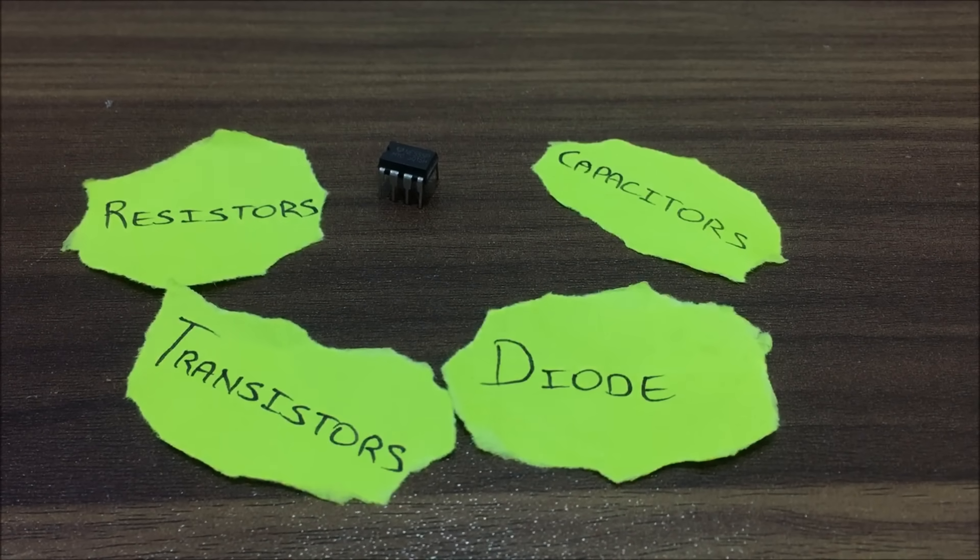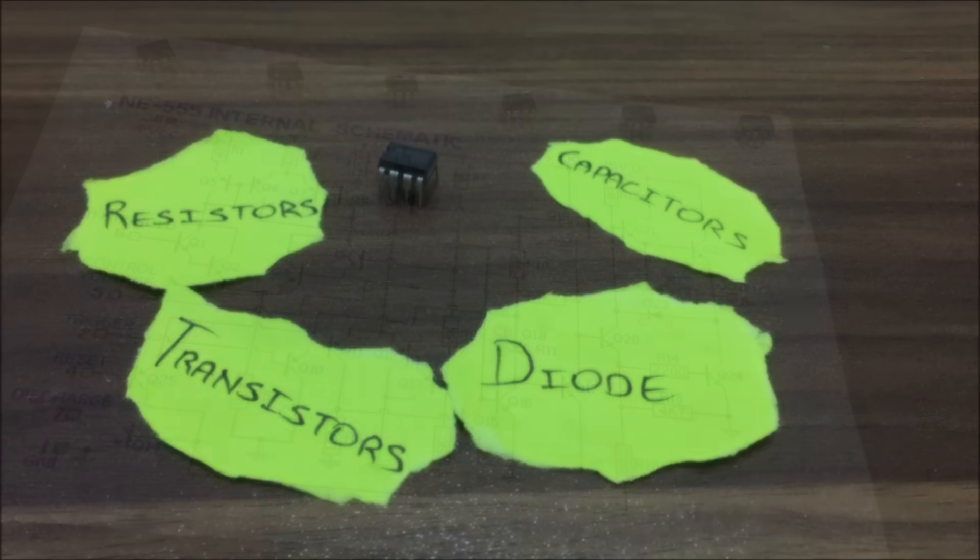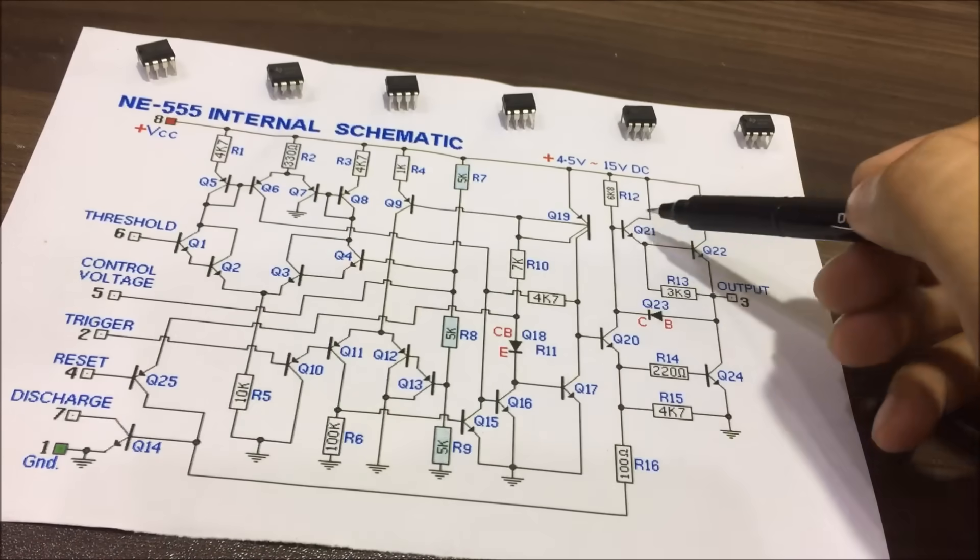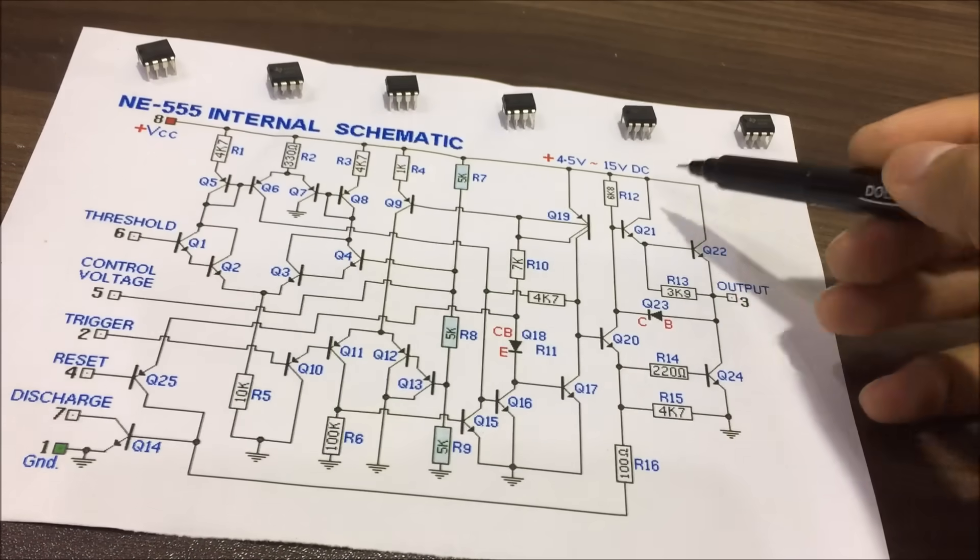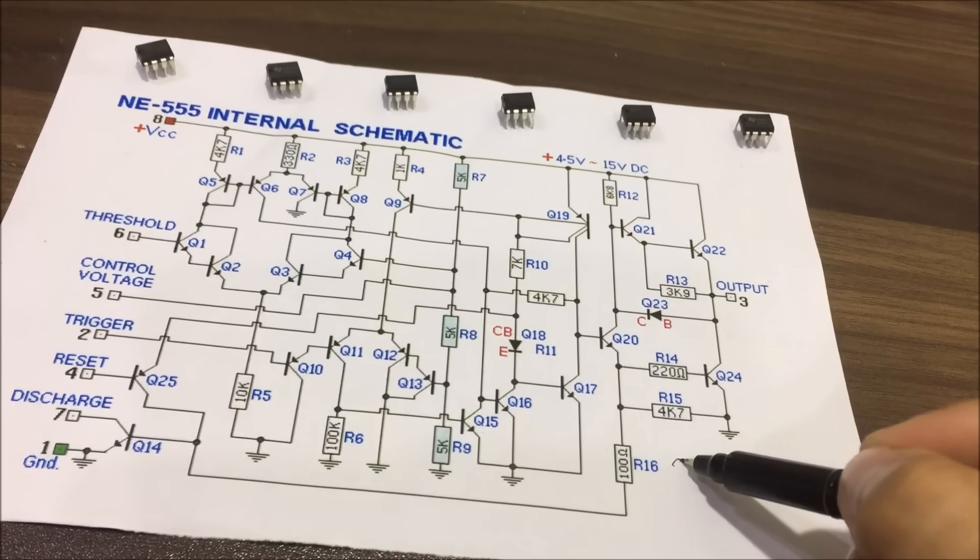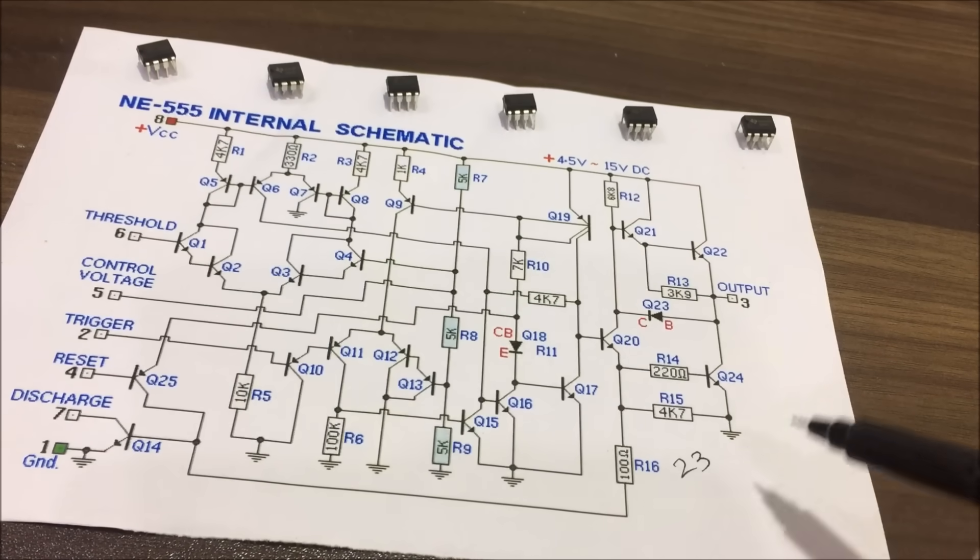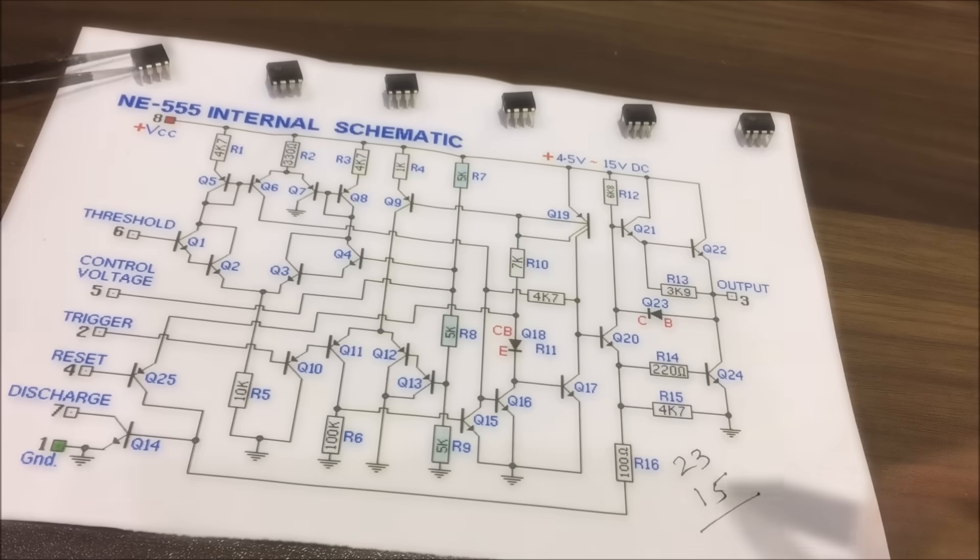So if we take a look at the internal schematic of a 555 timer, you can see there are a total of 23 transistors, 15 resistors, and a couple of diodes.